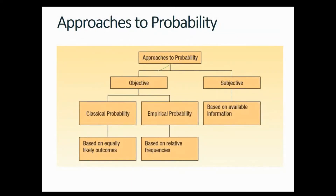So, in summary, approaches to probability are two: the objective approach, in which we do calculations, and the subjective approach, which is not based on numbers but on whatever information is available — like feelings, experience, or even gossip. Within the objective approach, there are two types: the classical probability approach, based on equally likely outcomes, and the empirical approach, based on relative frequencies and past information. Thank you so much, I hope this was useful — have a great day!